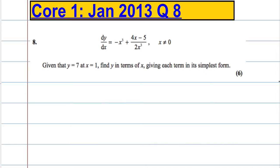OK, so we've got the gradient function and we're asked to work out the original function. So we're going to have to integrate. So I need to integrate negative x cubed plus 4x minus 5 over 2x cubed. Integrate that with respect to x.